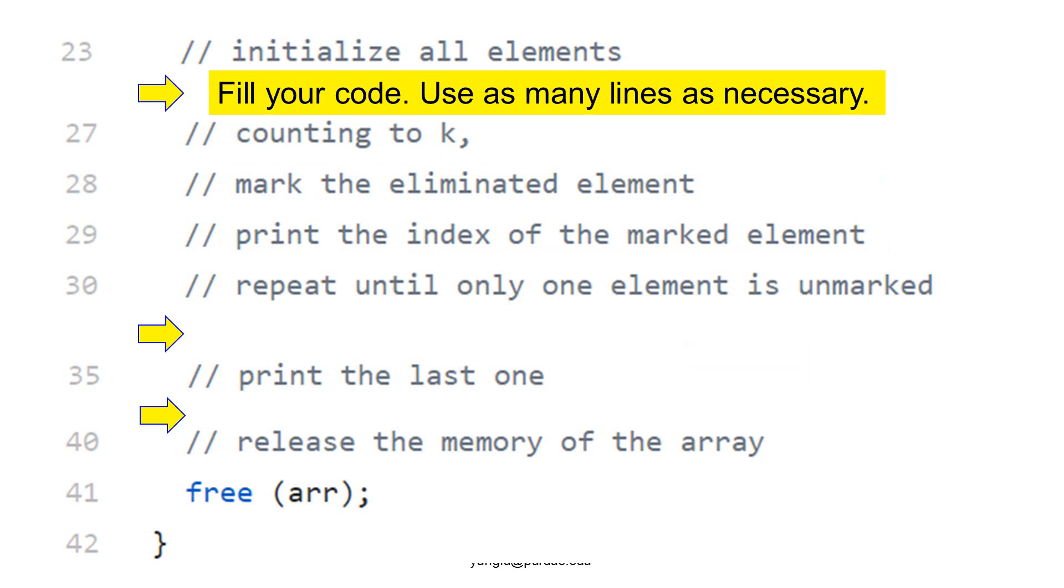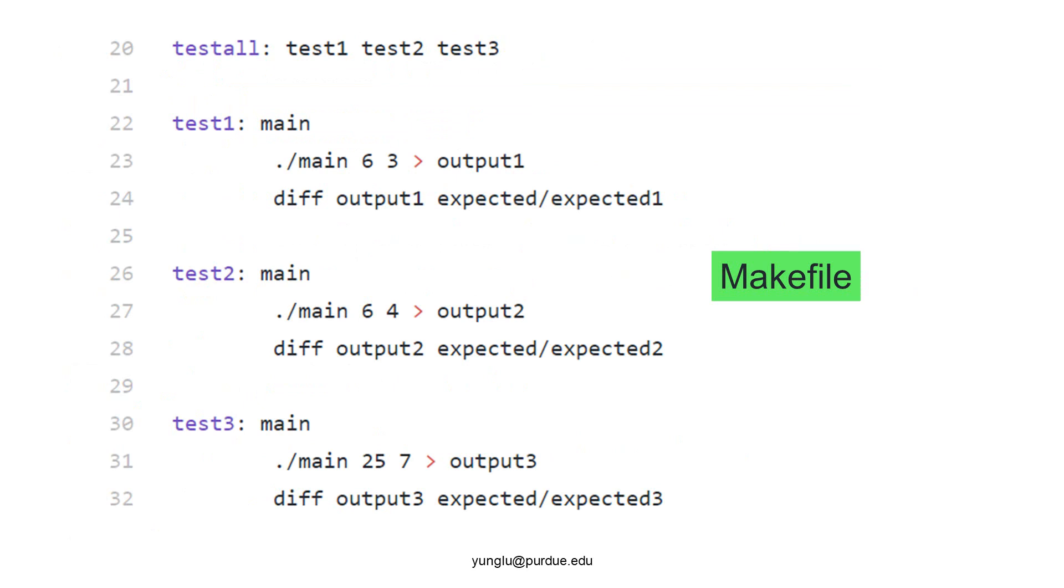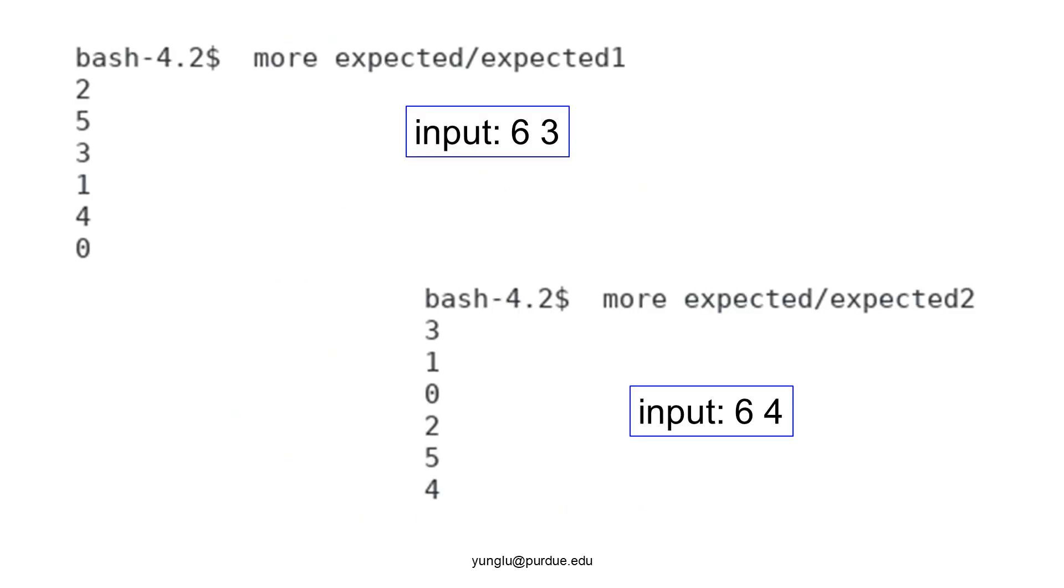Please fill your code between lines 23 and 27, lines 30 and 35, as well as lines 35 to 40. Use as many lines as you need. The makefile has three test cases using 6 and 3, 6 and 4, 25 and 7. The expected outputs are also given to you. You can see the expected output of the programs here.